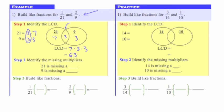The Venn diagram will also give us our missing multipliers. Looking back at the circle for 21, the only factor that is missing out of our LCD is this factor of 3. So 21 is missing a factor of 3 — that's the missing multiplier for 21. If we take a look at 9, the only factor that 9 is missing is this 7. So that is our missing multiplier for 9.